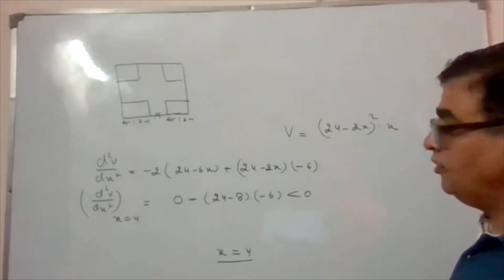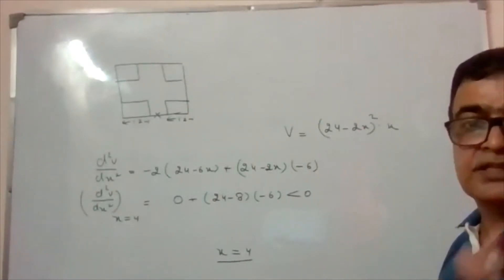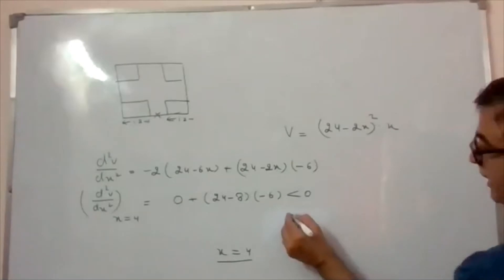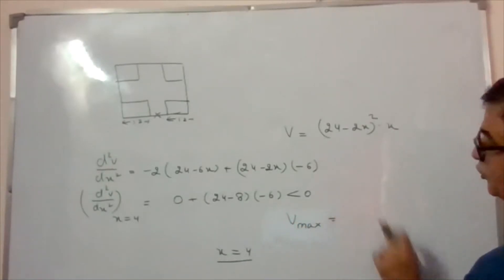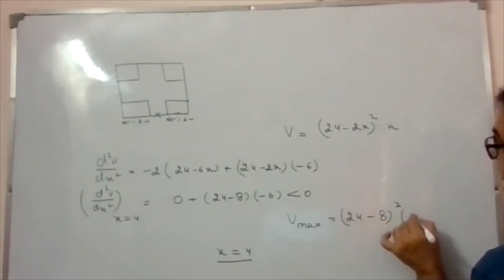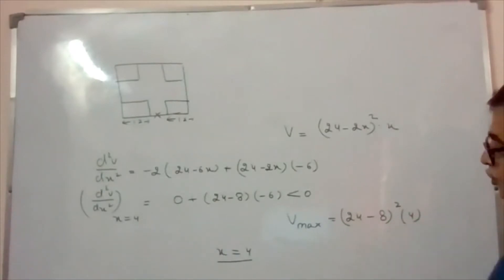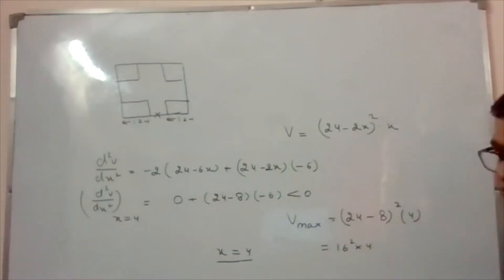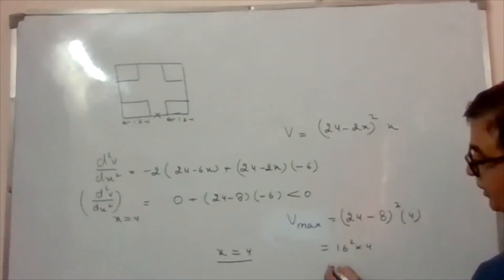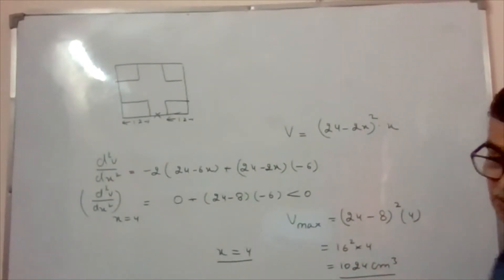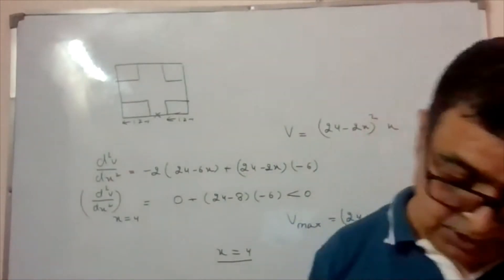Since x = 4 gives maximum volume, we calculate: V_max = (24 − 2×4)² × 4 = (16)² × 4 = 256 × 4 = 1024 cubic centimeters. So the maximum volume of the open box is 1024 cm³.